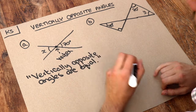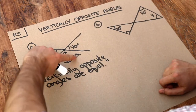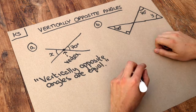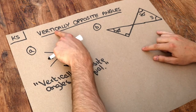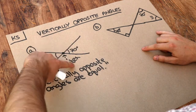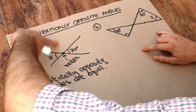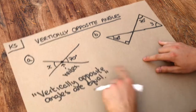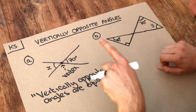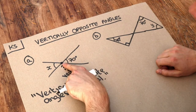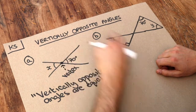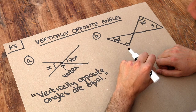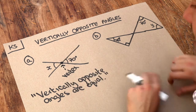You might think these are not vertically opposite — vertically is that way. But the word 'vertically' here is not based on the usual meaning of vertical. It means they're opposite with respect to this vertex. So 'vertically' is basically the adjective form of 'vertex'.